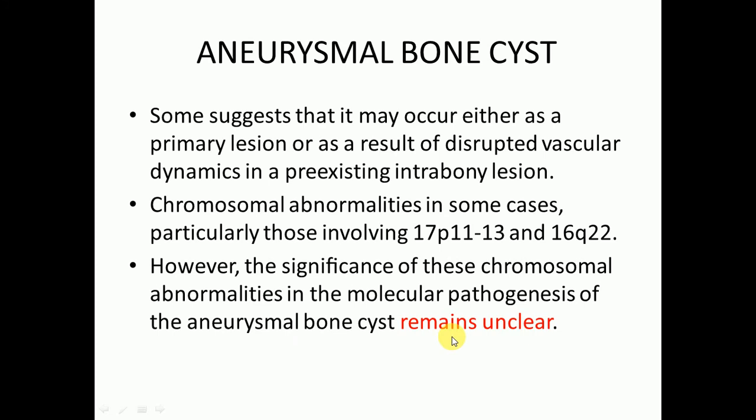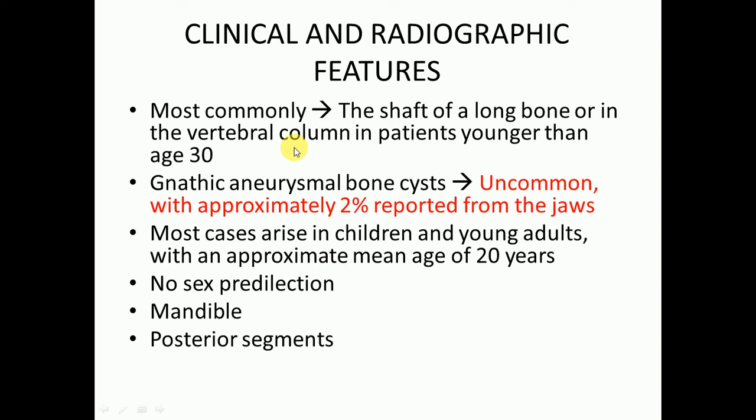Most commonly it involves the shaft of a long bone or vertebral column in a patient younger than age 30. Gnathic aneurysmal bone cysts are very uncommon, with approximately 2% reported from the jaws, meaning it is very less common in the head and neck region. Most cases arise in children and young adults with an approximate mean age of 20 years.